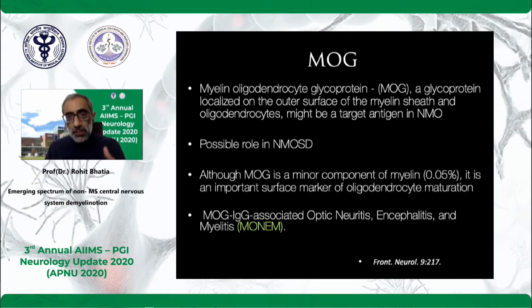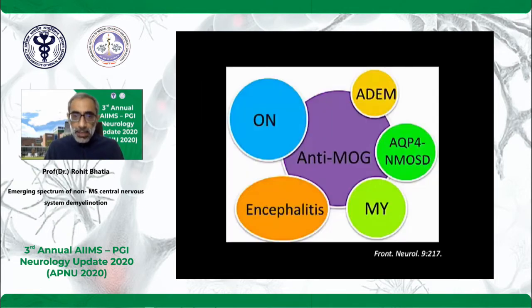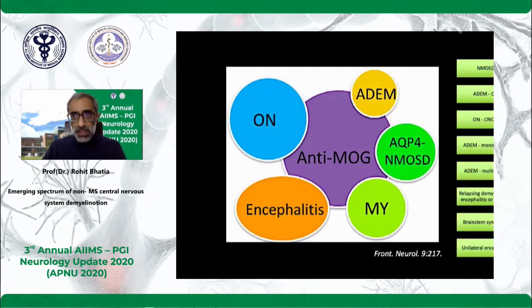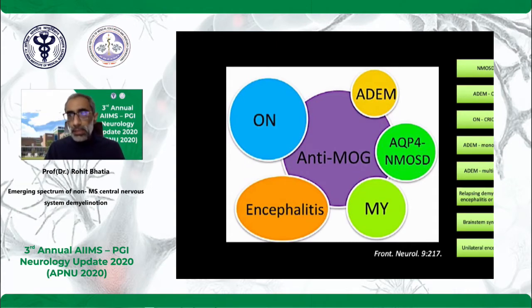If you see a pediatric patient with recurrent ADEM-like episodes, strongly think of MONAM-like syndrome because these patients generally turn out to be MOG-positive. MOG antibody again encompasses a large basket of disorders: ADEM, optic neuritis, encephalitis, myelitis, and aquaporin-4 associated NMOSD — the pattern. Typically they both don't co-exist in positivity in my experience — you will find it very rarely. The presentations could range from encephalitis to CRION to NMOSD to ADEM and relapsing remitting disease.